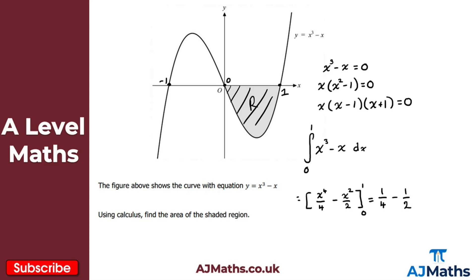That gives minus a quarter. You might wonder why we get a negative answer when talking about area — it's because this region is below the x-axis, and integration of a region below the x-axis gives a negative value. That's expected and not incorrect. Since area cannot be negative, we negate it: R equals positive a quarter. So the area of the shaded region is 1/4 units squared.